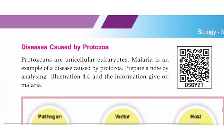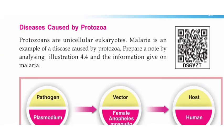A disease caused by protozoa — protozoa is a disease caused by protozoa. Protozoans are unicellular eukaryotes. Protozoa is called unicellular eukaryotes.